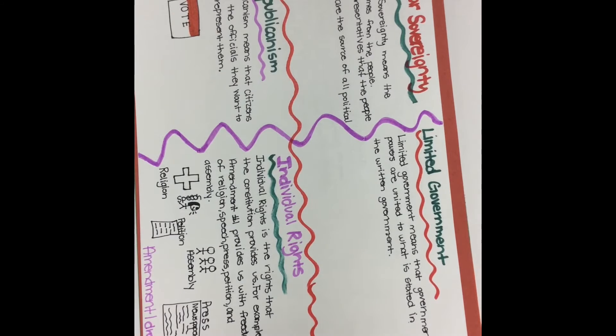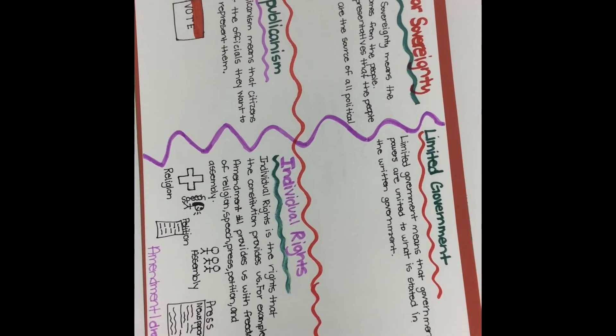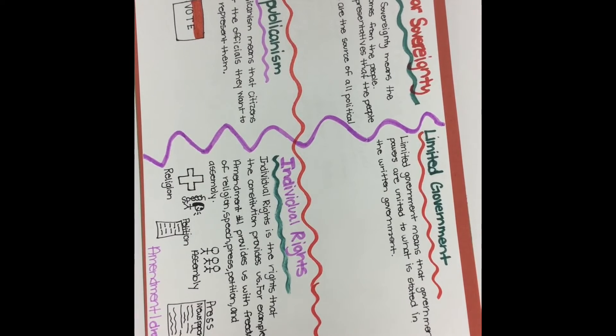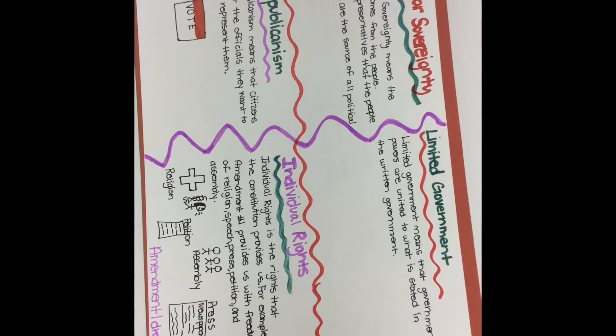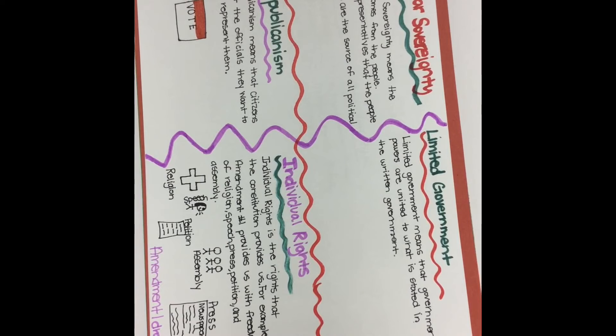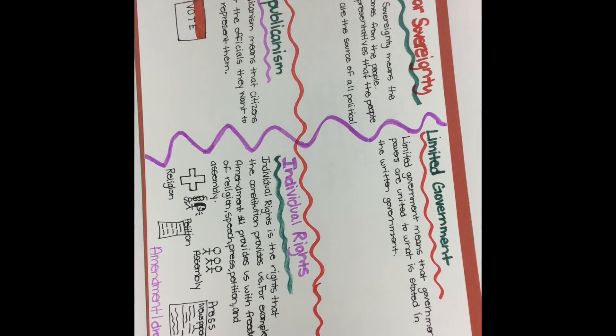Popular sovereignty means the power comes from the people. The representatives that the people choose are the source of all political power. Limited government means that government powers are limited to what is stated in the Constitution. Republicanism means the citizens elect the officials they want to represent them.